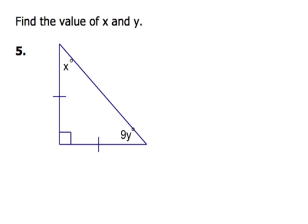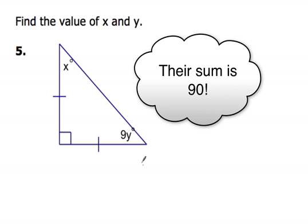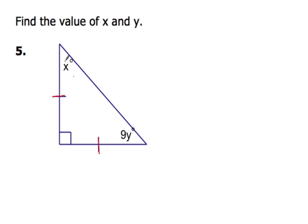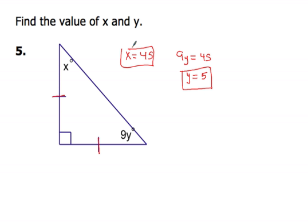In example number five, we have two variables: x and y. One angle is 90 degrees, and the other two are x degrees and 9y degrees. Since the angle sum must be 180, x and 9y together must sum to 90. But we also have two congruent sides, which means the angles opposite them — x and 9y — are congruent. So both must be equal and sum to 90, making each one 45 degrees. Therefore x = 45, and since 9y = 45, y = 5.